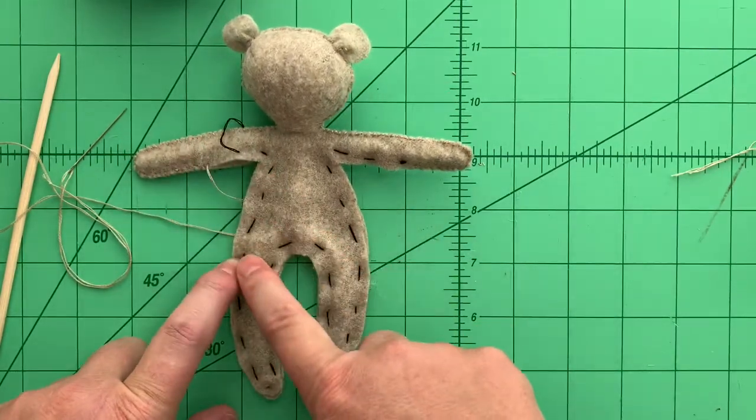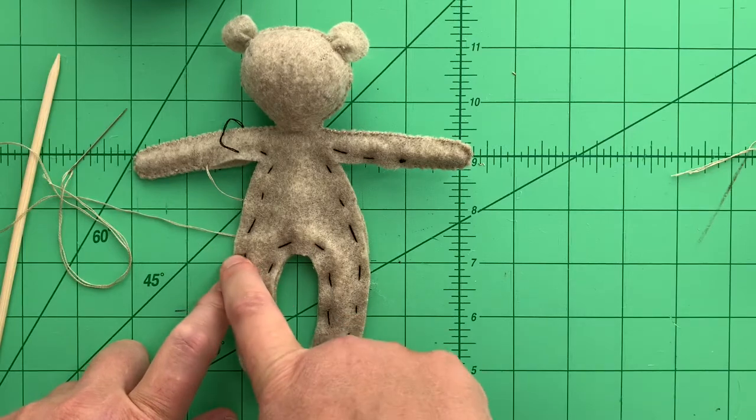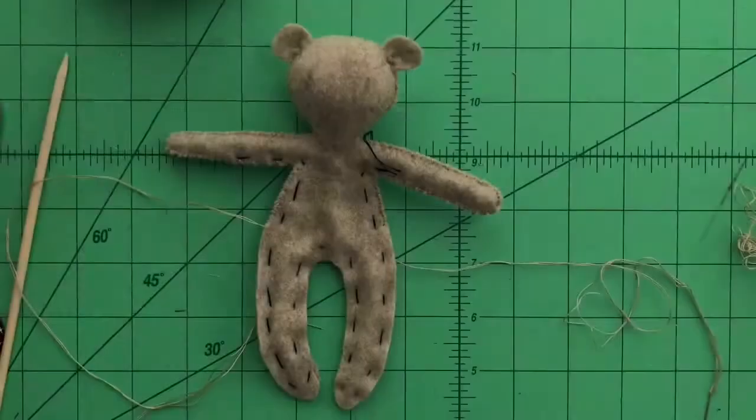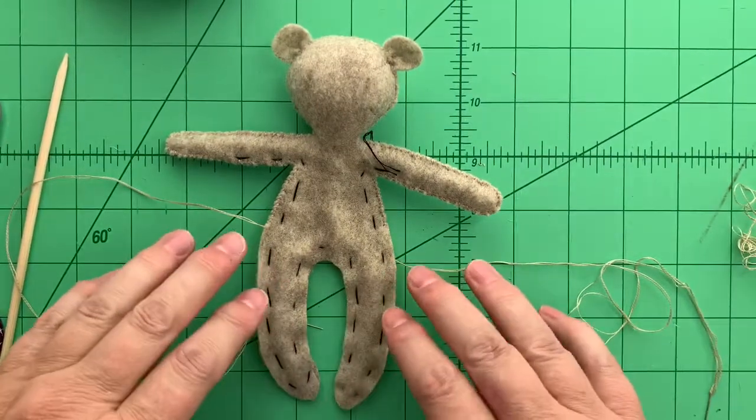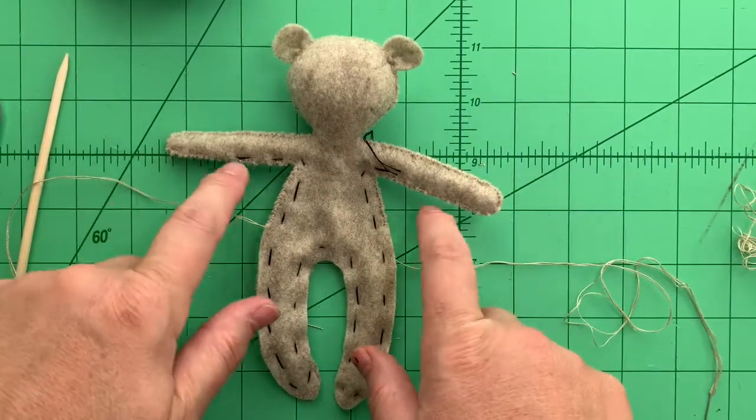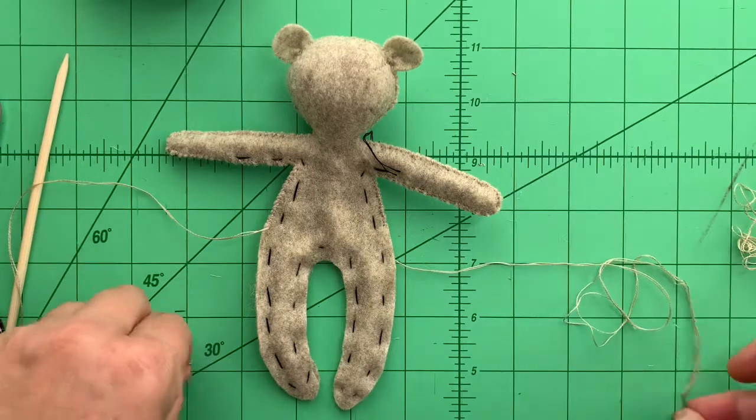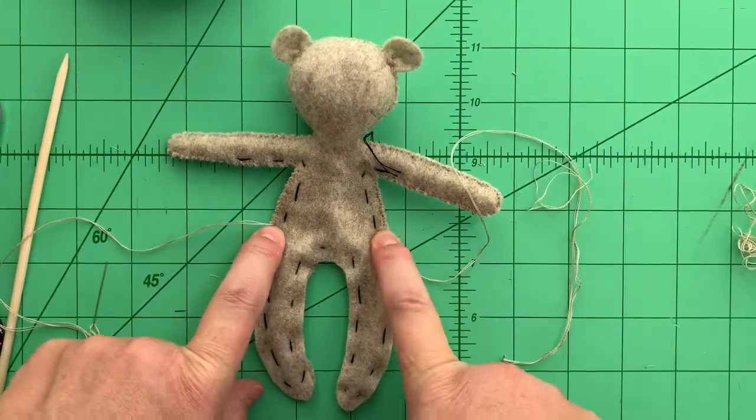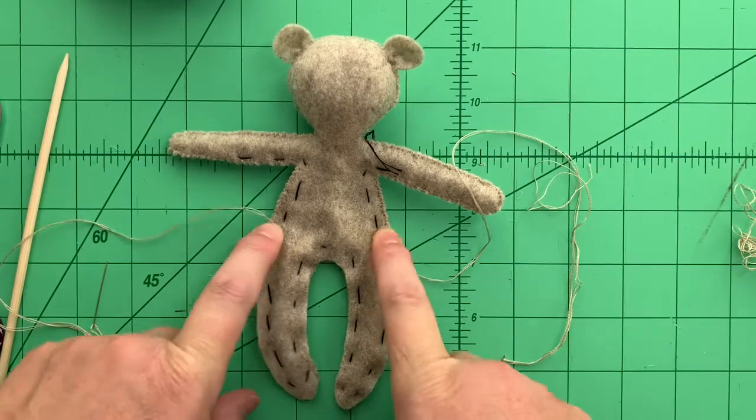I'm going to continue with my whip stitch and I'm going to stop about right here. I have done some of the whip stitch. I've actually got two needles going here, one on each side, and I've stitched down to about his lower abdomen.